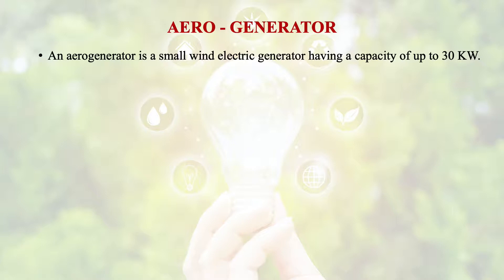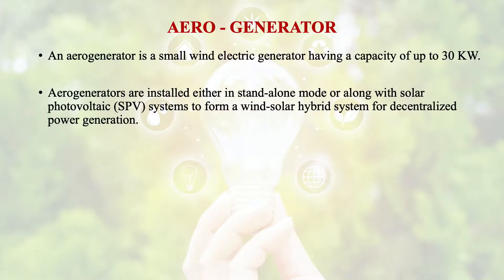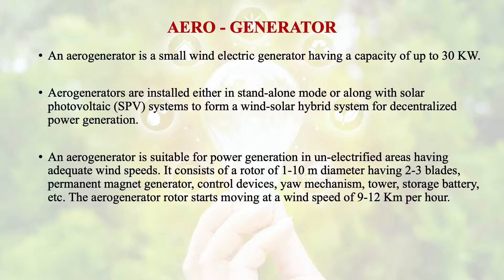An aerogenerator is a small wind electric generator having a capacity of up to 30 kW. These are generally installed either in stand-alone mode or along with a solar photovoltaic system to form a wind-solar hybrid system for decentralized power generation. They are suitable for power generation in unelectrified areas having adequate wind speeds. Generally, the rotor of these aerogenerators is of 1 to 10 meter diameter having 2 to 3 blades, a permanent magnet generator, control devices, yaw mechanism, tower, storage battery, etc.